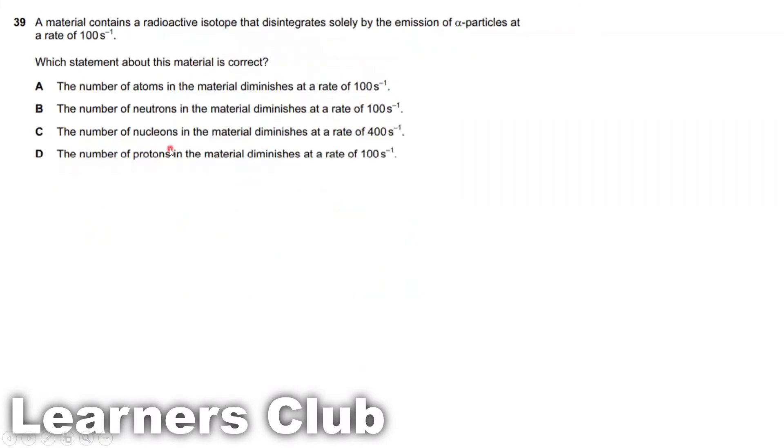Question 39. A material contains a radioactive isotope that disintegrates solely by the emission of alpha particles at a rate of 100 per second. So alpha, as we all know, is 4-2, which means it has 2 protons and 2 neutrons. It's disintegrating 100 per second, which means there is a disintegration of 200 protons per second or 400 nucleons per second.